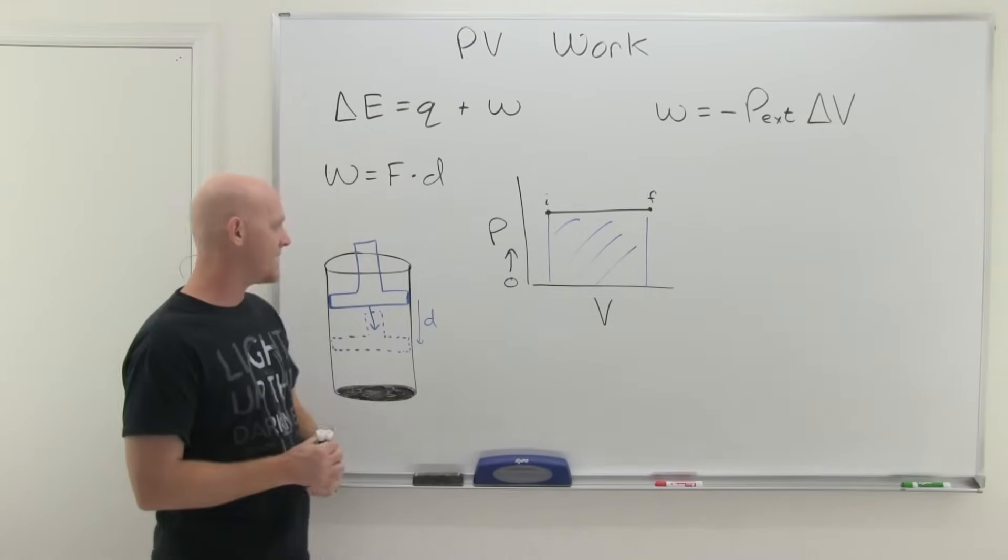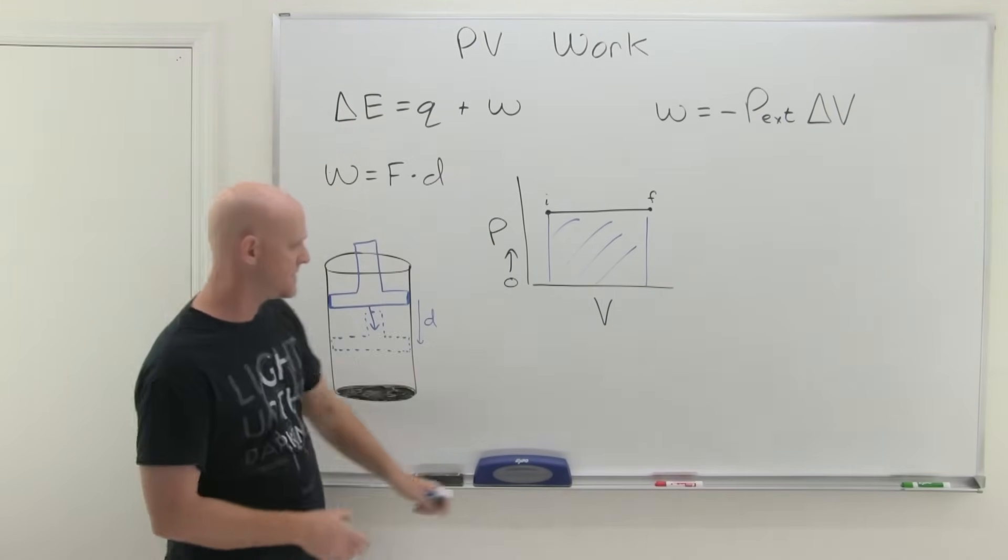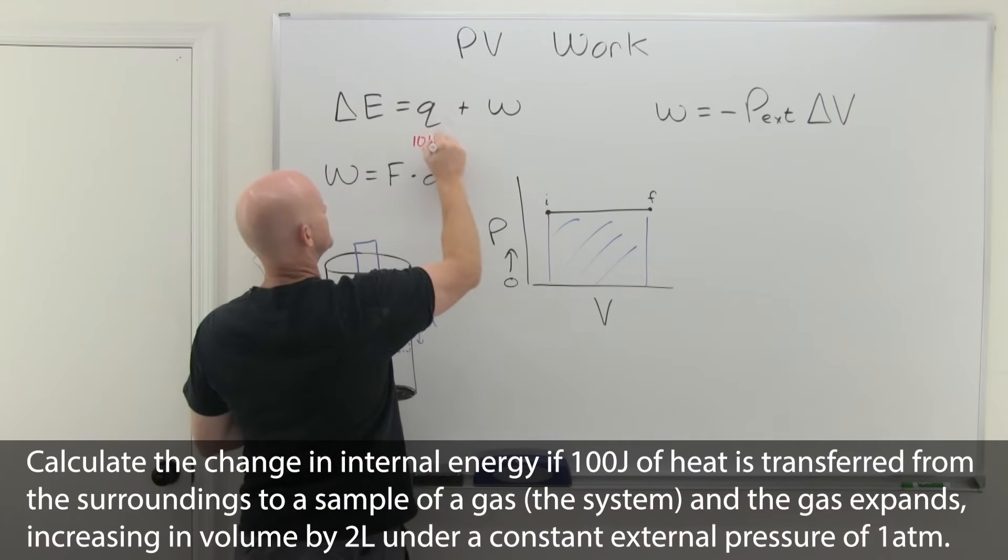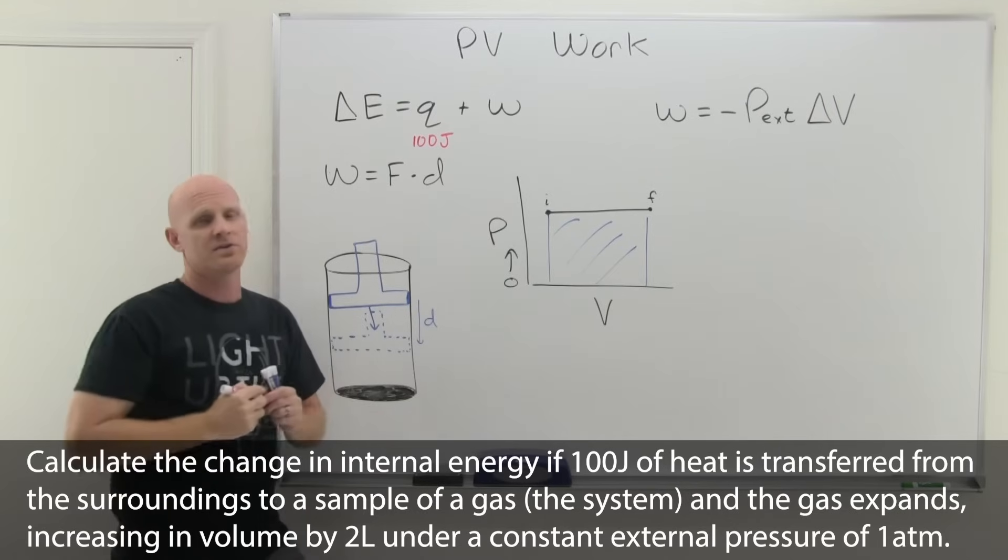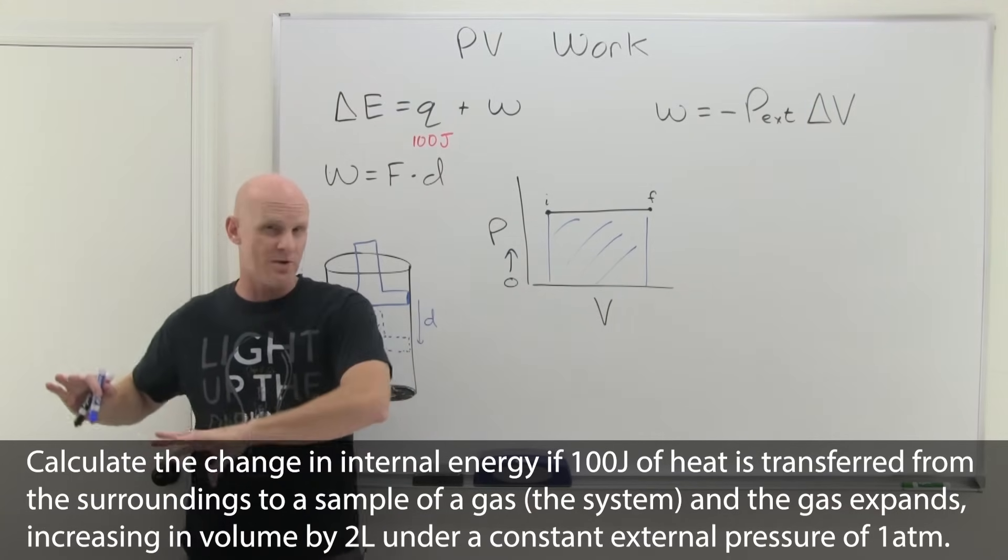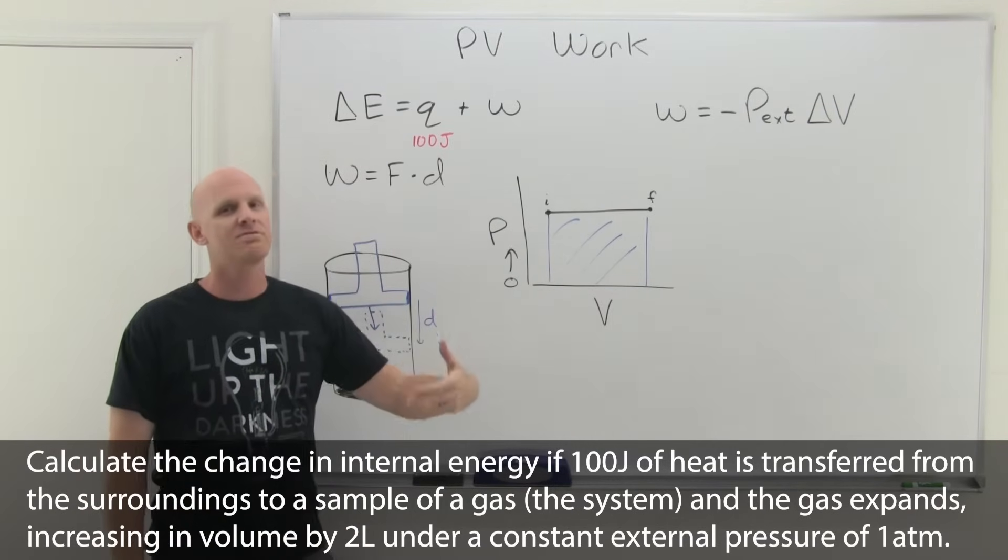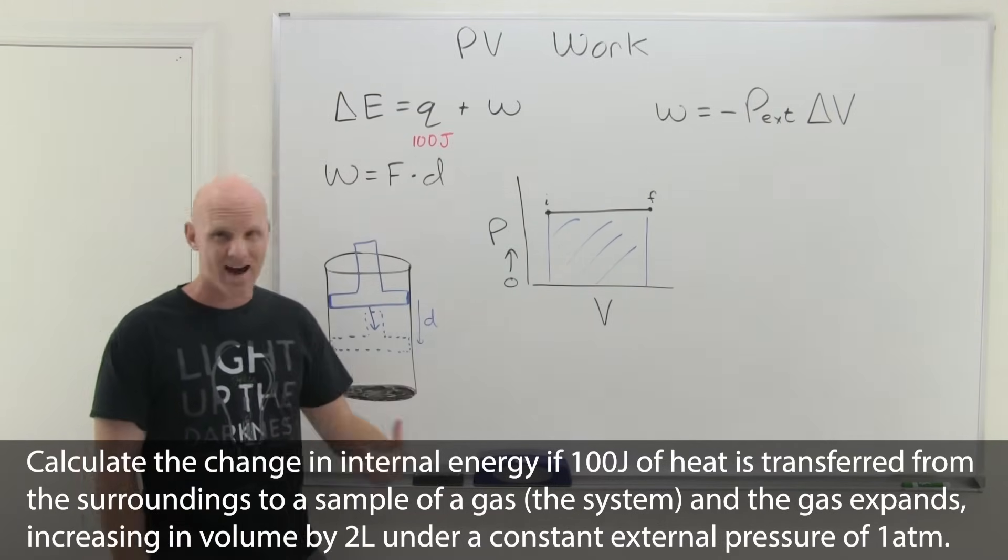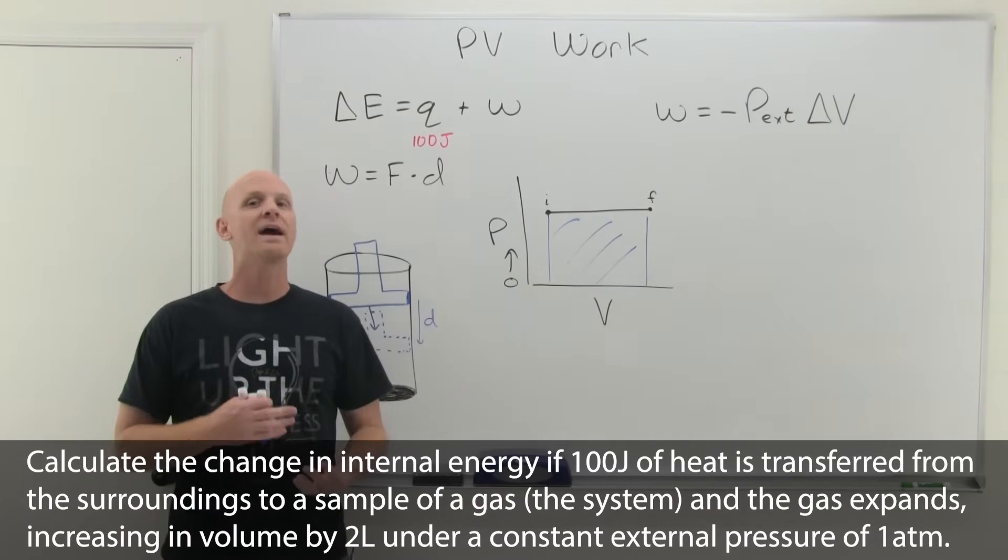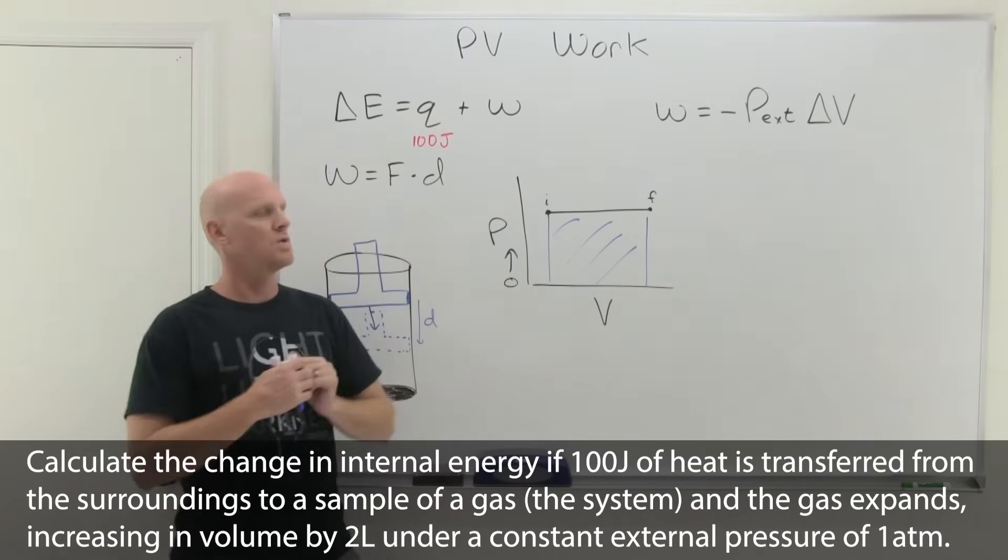So now let's go back to calculating work. And let's say you're given that Q is something like 100 joules. So in this case, that means that the heat was transferred from the surroundings into the system. In this case, typically 100 joules of heat. And then you're told that this gas at a constant external pressure of one atmosphere expanded by two liters.